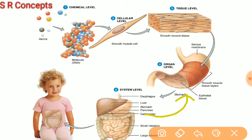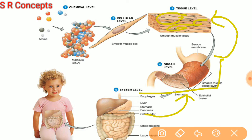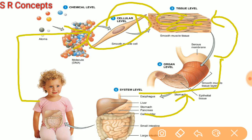An organ system is made up of different organs. An organ is in turn a group of tissues which together perform a particular function. A tissue is a group of cells which together perform a particular function. Therefore, the smallest building block of the bodies of living organisms is the cell — the structural unit of life.